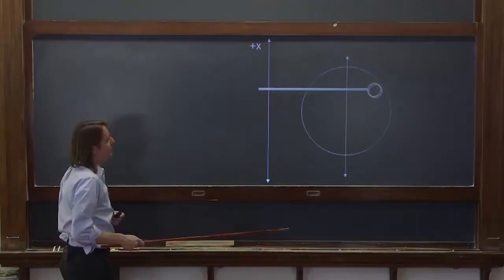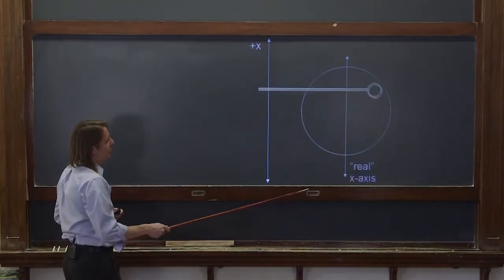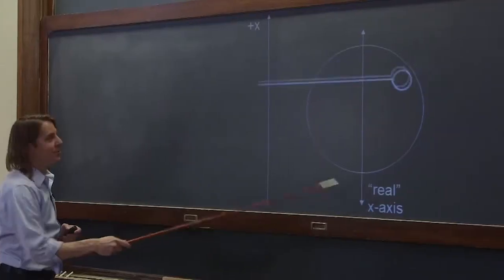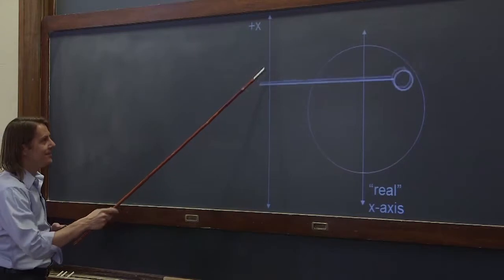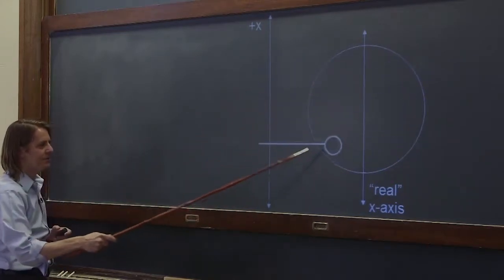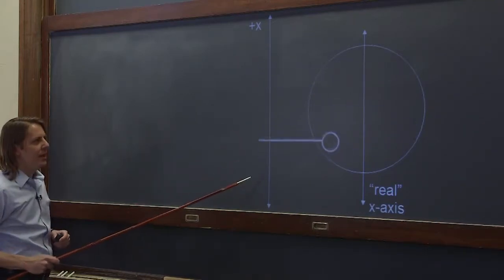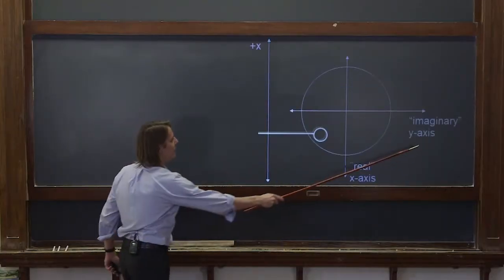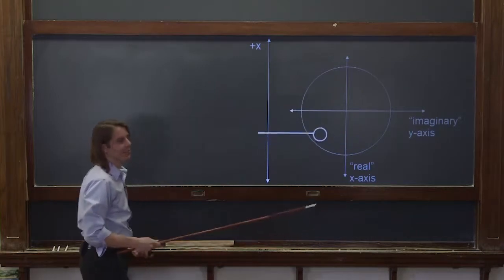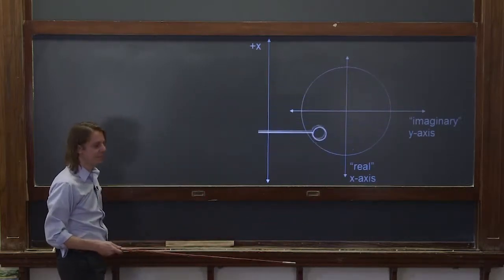So we could do that. And if we were going to label these axes, we'd probably call this one the real axis, because this is the real object. This is the real thing. This is a figment of our imagination. But the real axis is where the real object moves. And we could label this one the imaginary axis, because that's the one we just imagined, that we just made up.